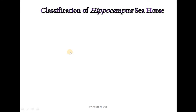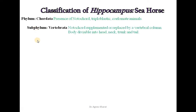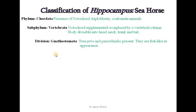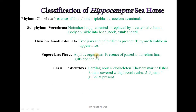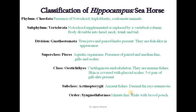The third organism is Hippocampus, commonly called the seahorse. Its classification: phylum Chordata, subphylum Vertebrata, division Gnathostomata because true jaws and paired limbs are present, superclass Pisces, class Osteichthyes. Subclass is Actinopterygii — these are ray-finned fishes. Order is Syngnathiformes and genus is Hippocampus.